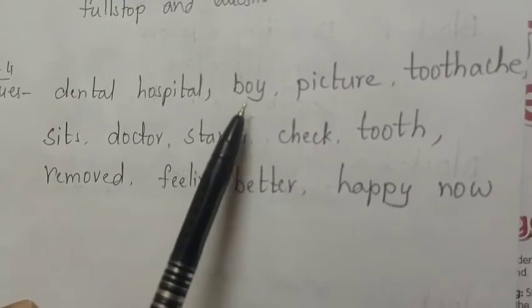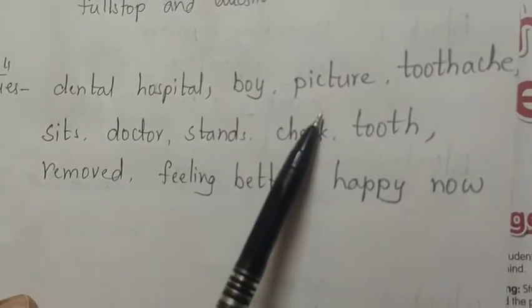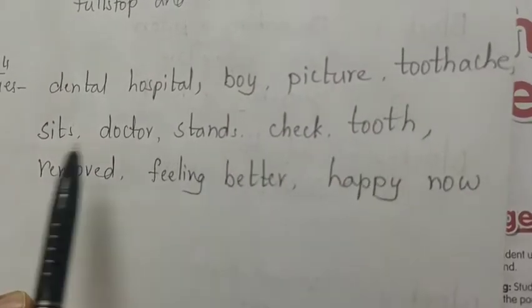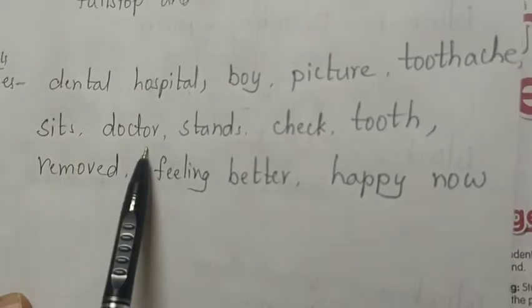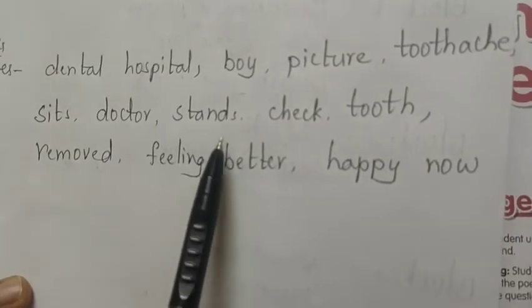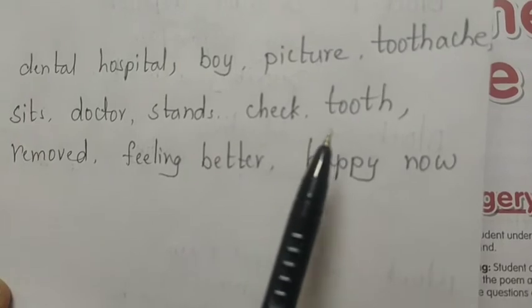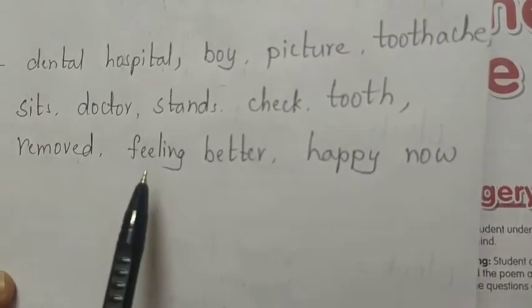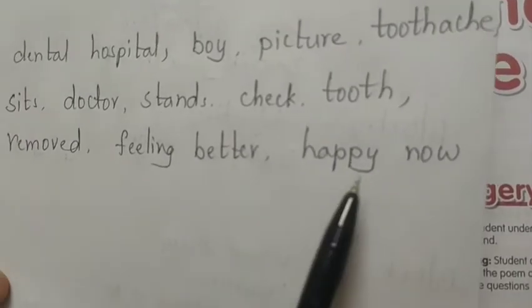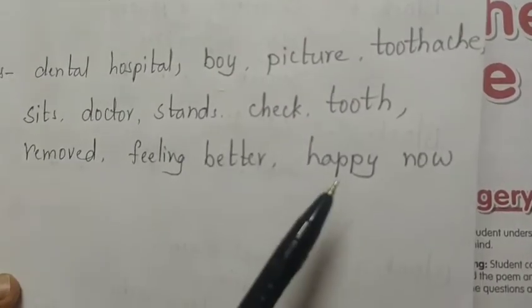For this picture I have written some clues. What are the clues here? Dental hospital. Boy. Picture. To take. Sits. Doctor. Stands. Check. Tooth. Removed. Feeling better. Happy now. So these are the clues children.